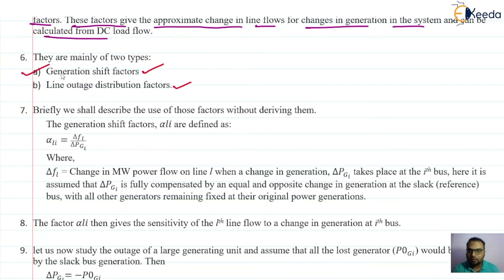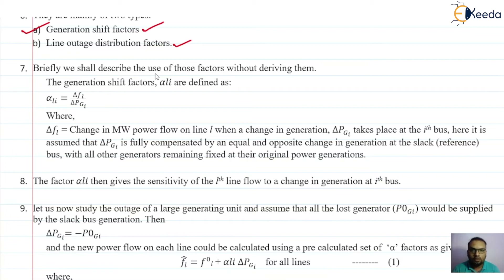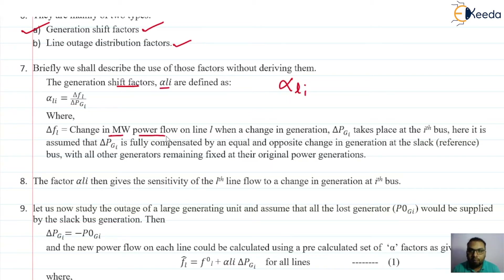Let us discuss the Generation Shift Factor. Briefly, we shall describe these two factors without deriving them — we are not going to do any derivation here. The Generation Shift Factor, denoted as alpha_Li, is defined as the ratio of delta_FL divided by delta_PGi. Delta_FL is the change in megawatt power flow on line L when a change in generation delta_PGi takes place on the ith bus. The generator will be connected on that bus.